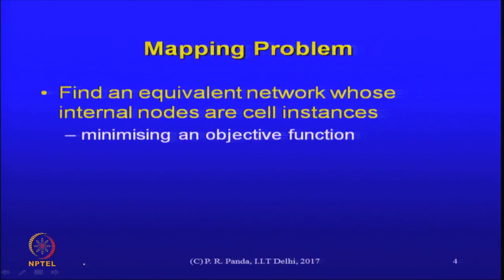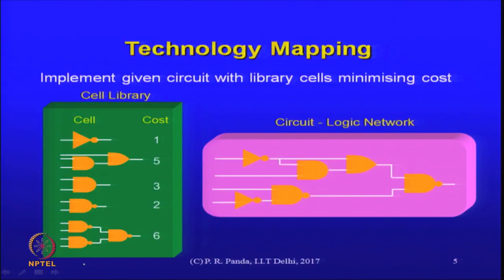Our mapping problem can then be defined as: find an equivalent network. You start with a network but find an equivalent network whose internal nodes are all cell instances, and some objective function has to be optimized in the process. Let us quickly illustrate technology mapping with an example. What we have here is a typical logic network.